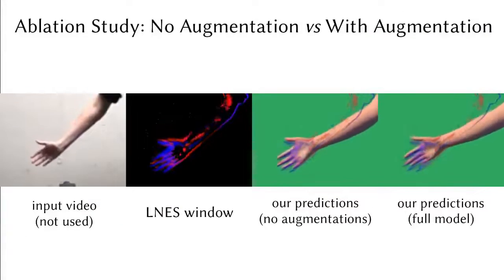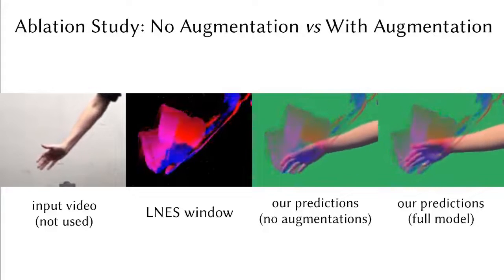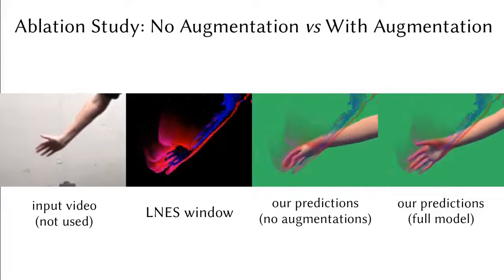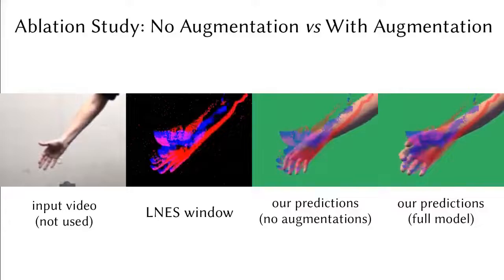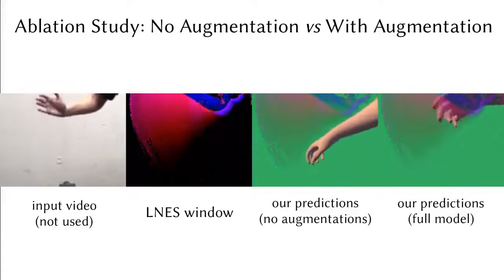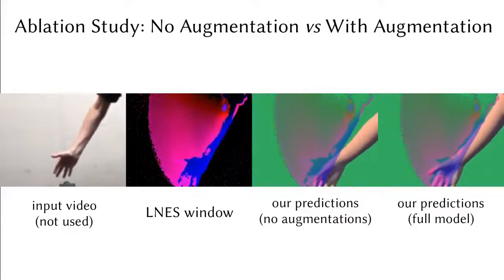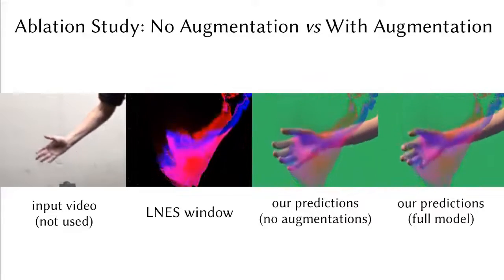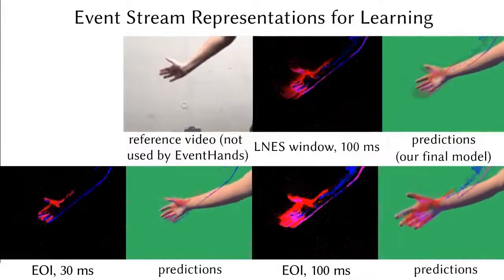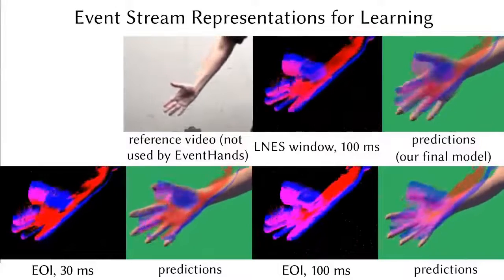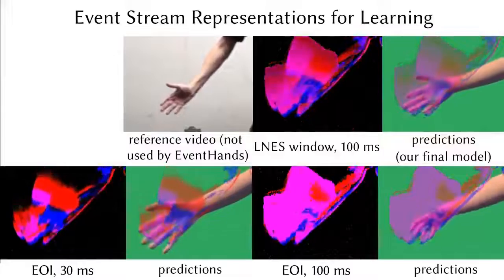We also find that both timestamps and polarities are expressive reconstruction cues preserved by our LNES representation that improve the overall accuracy over the naive method, which loses temporal information within a window. This is especially true when longer event windows are used.